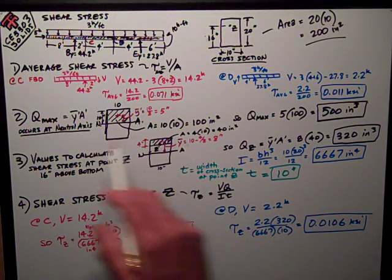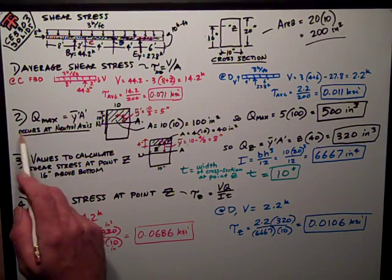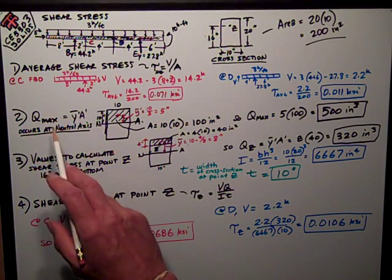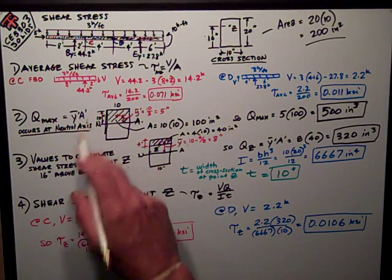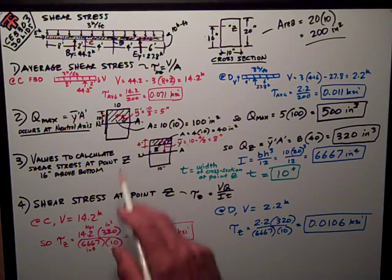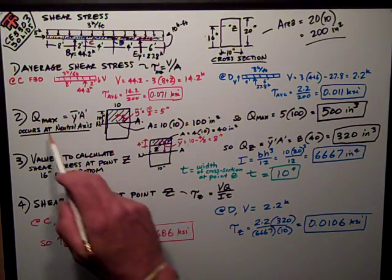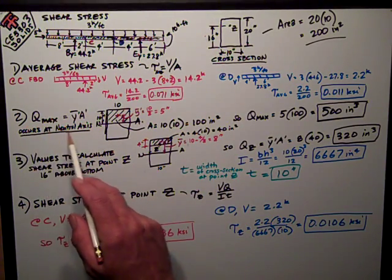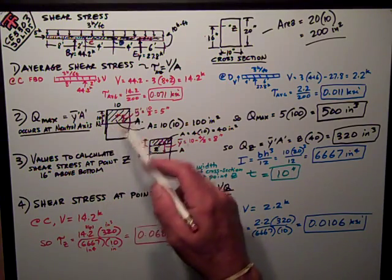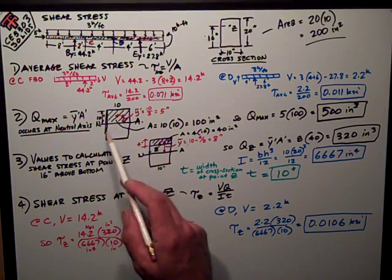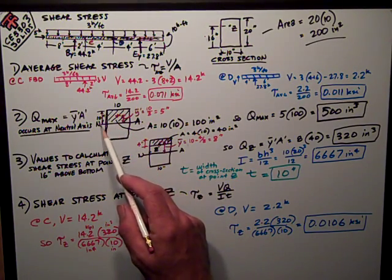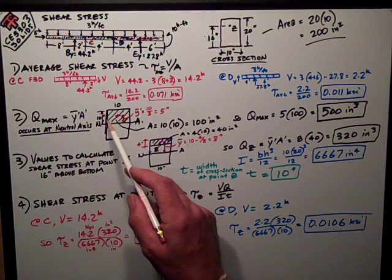So all the tests had this same question number two. What's the maximum Q, which is Y bar prime A prime, on that section? Well, the maximum Q occurs at the neutral axis, where I have the biggest area above and away from the neutral axis.